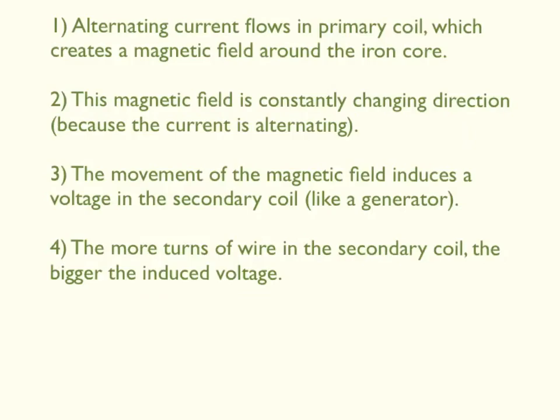Number three, the movement of the magnetic field induces a voltage in the secondary coil. That's working just like a generator. And number four, the more turns of wire we have in that secondary coil, the bigger that induced voltage will be. So that gives us control over whether the transformer increases or decreases the voltage.